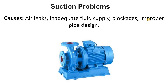The next defect is suction problems, which are somewhat similar to cavitation. Please watch the centrifugal pump playlist for more detailed coverage. Suction problems can include air leakage, inadequate fluid supply, blockages, and improper pipe design. Cavitation and vibration can also be associated with suction problems, as well as leakage in the suction line — these must always be considered.